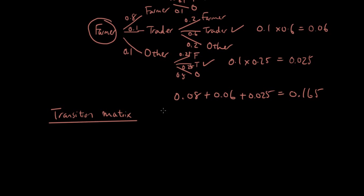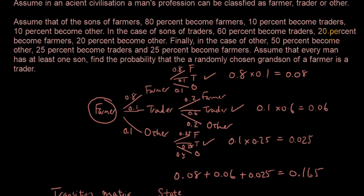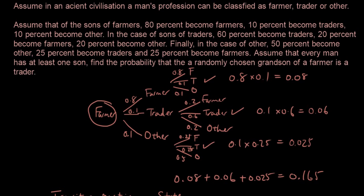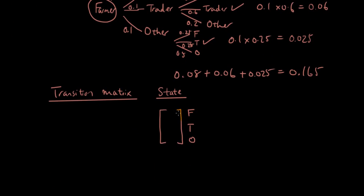We also have something called the state of the system. You can think of the state as how many farmers, traders, and other professions we have right now at this moment, written as a vertical matrix. Currently the question has us starting with one farmer and zero traders and zero others.